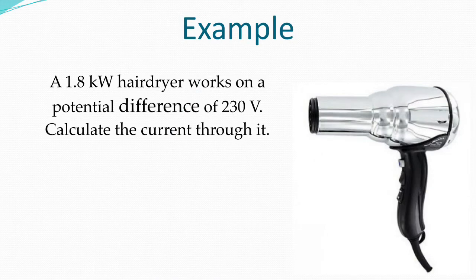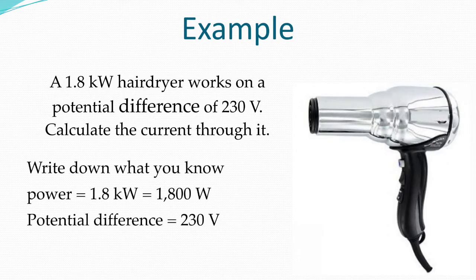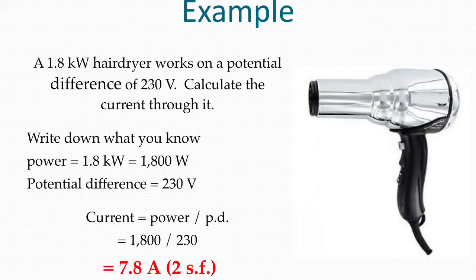A 1.8 kilowatt hairdryer works on a potential difference of 230 volts. Calculate the current that will flow through it. Our first step with any math problem is to write down what we know. So the power is 1800 watts and the potential difference is 230 volts. So using P on IV, the equation we need for current is power over potential difference or voltage. So the answer will be 7.8 to two significant figures.